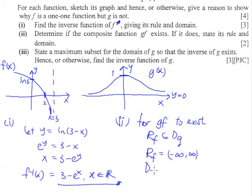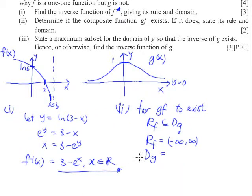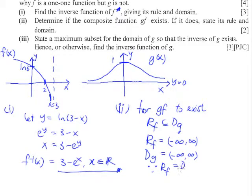The domain of g is given to us — x is all real numbers, which means negative infinity to positive infinity as well. Since the range of f is equal to the domain of g, therefore gf exists.